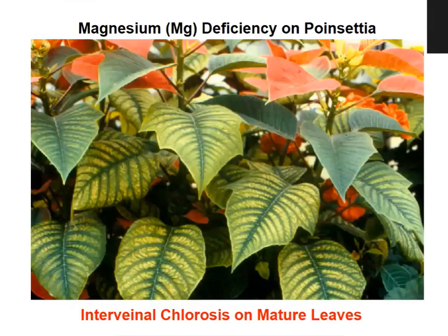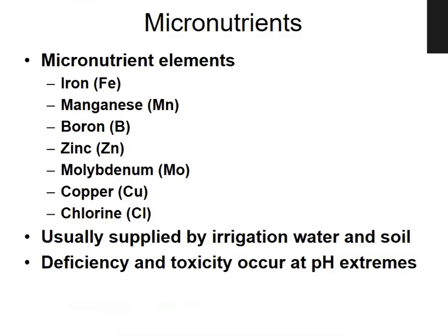These images show the deficiency symptoms of magnesium — interveinal chlorosis on mature leaves. Deficiency symptoms of magnesium appear on mature or older leaves, unlike micronutrient deficiencies.